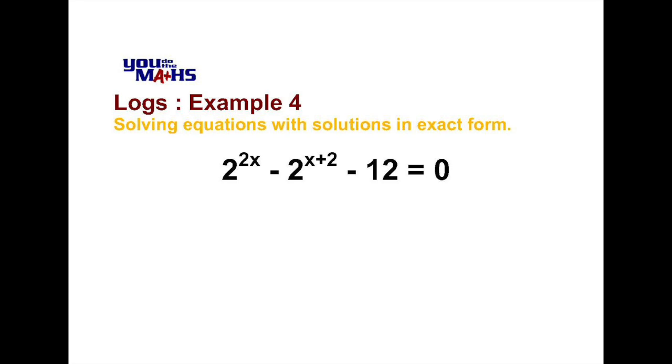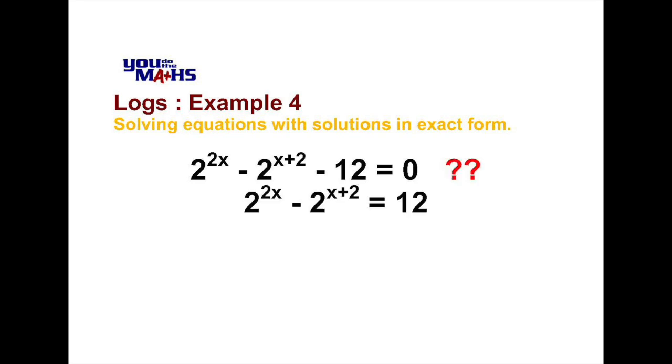One way to do this is to put the 12 on the right hand side of the equation so we can group the terms involving x on the left hand side. Once we've done that, another possible move is to take logs of both sides.